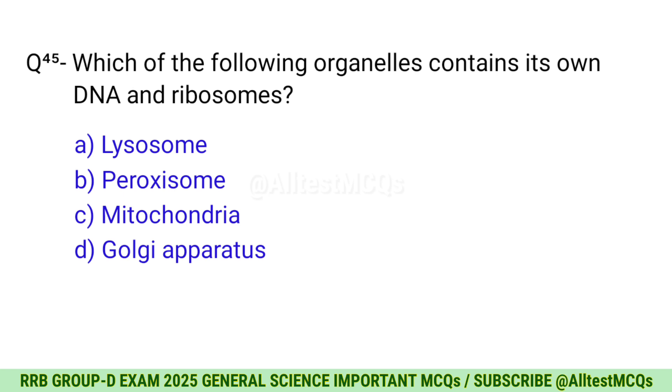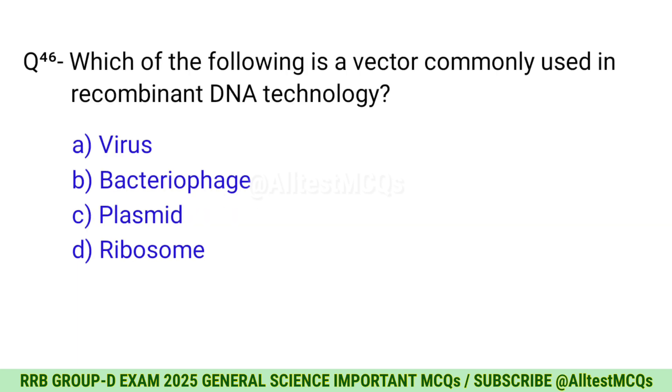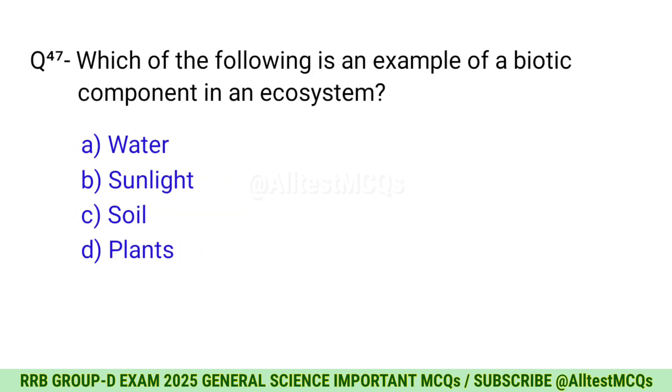Question 44: Which muscle is involuntary and striated? The right option is B, Cardiac. Question 45: Which of the following organelles contains its own DNA and ribosomes? The right option is C, Mitochondria. Question 46: Which of the following is a vector commonly used in recombinant DNA technology? The right option is C, Plasmid.